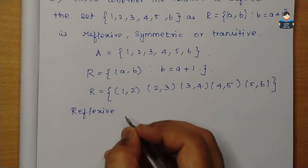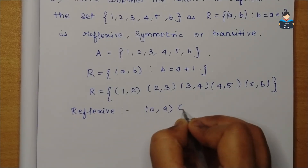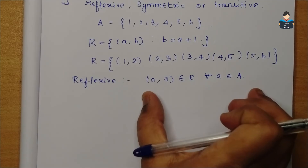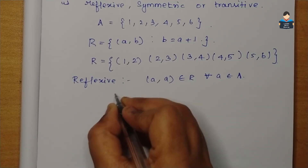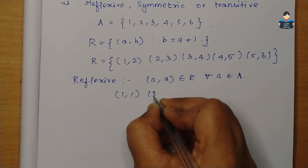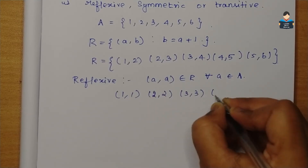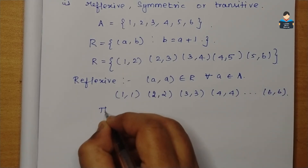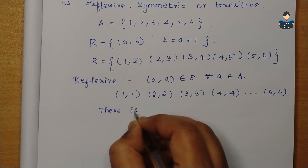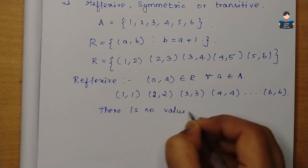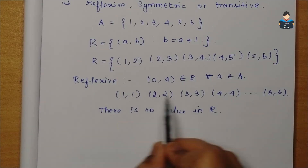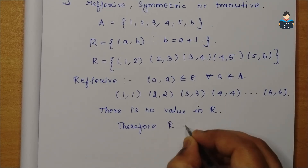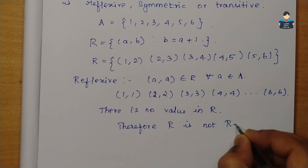First, check reflexive. The condition is (a,a) ∈ R for all a ∈ A. We need (1,1), (2,2), (3,3), (4,4), (5,5), (6,6) to be in R. But none of these values are present in R since b = a+1 means b ≠ a. Therefore, R is not reflexive.